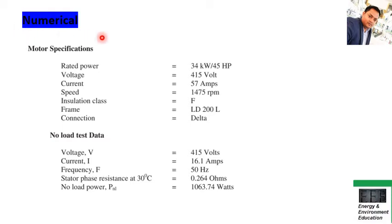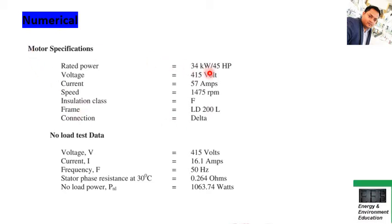Now let's look at one very important numerical that has been asked many times before and may appear in coming exams. This is a complete long answer type numerical question. The motor specification is given: rated power is 34 kW or 45 HP, voltage, current, speed, insulation class, frame, and delta connection are given. No-load test data is also provided: voltage, current, frequency, phase resistance at 30°C, and no-load power are all given.